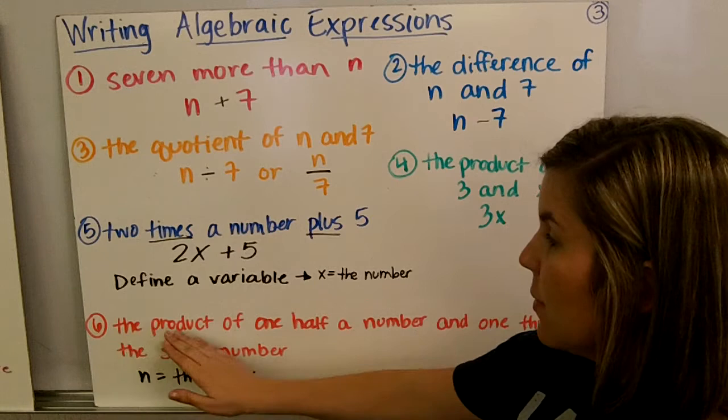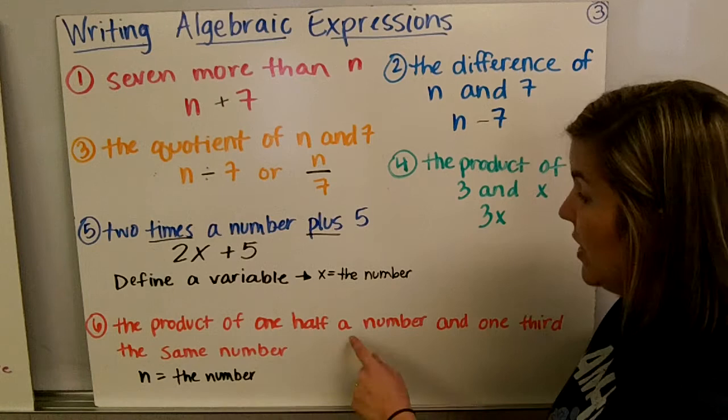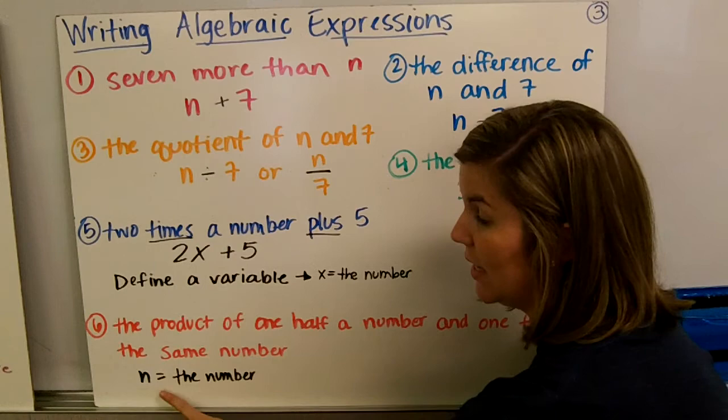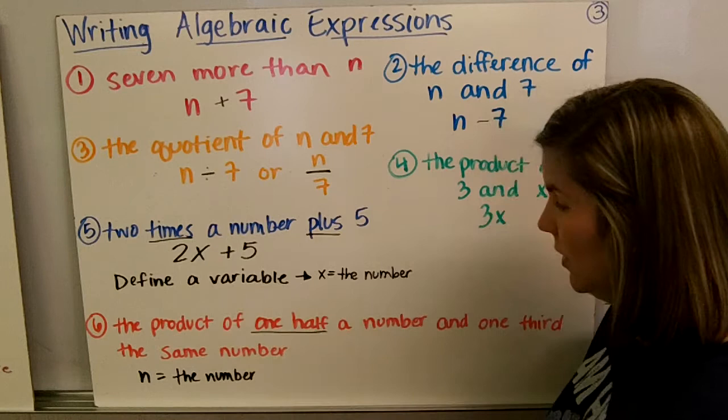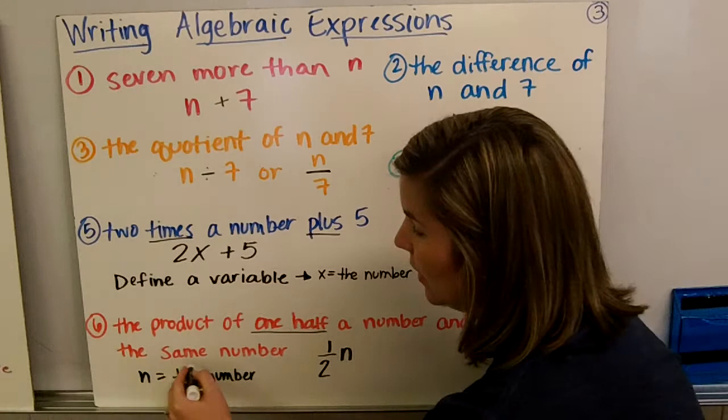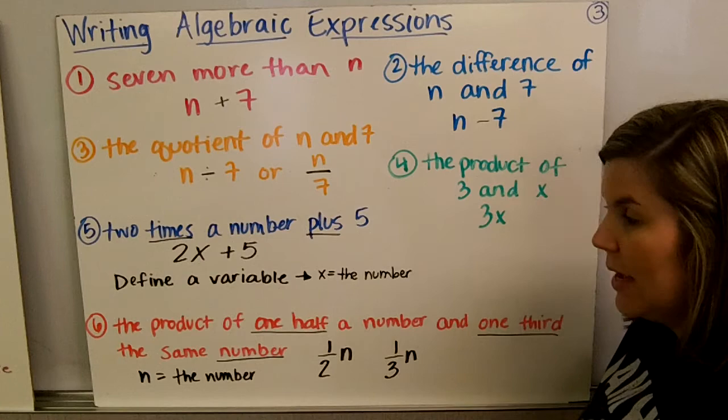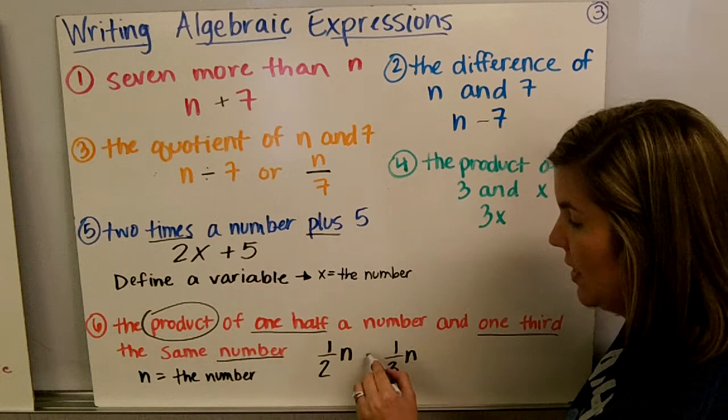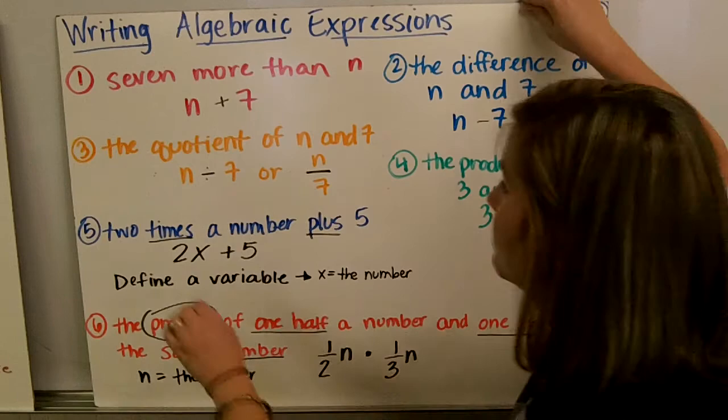Number six, the product of one half a number and one third the same number. Again we have 'a number,' so we're going to define a variable. n is going to be the number. One half a number would be one half times n. And one third the same number is one third n. This says the product, which is a multiplication word, so one half n times one third n.